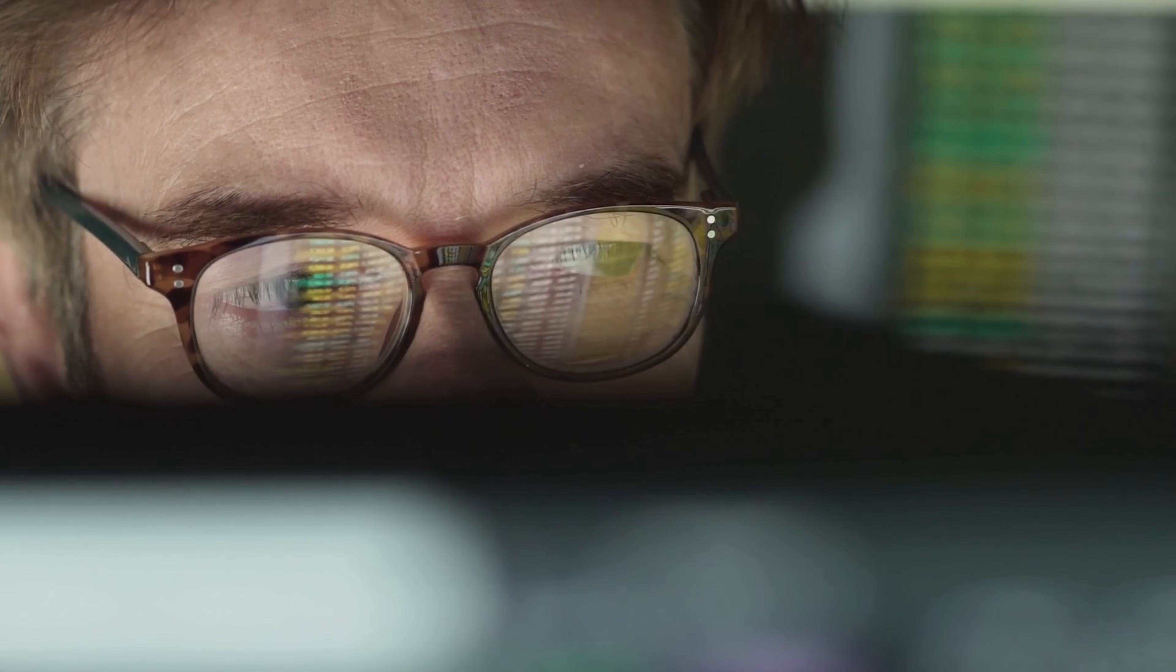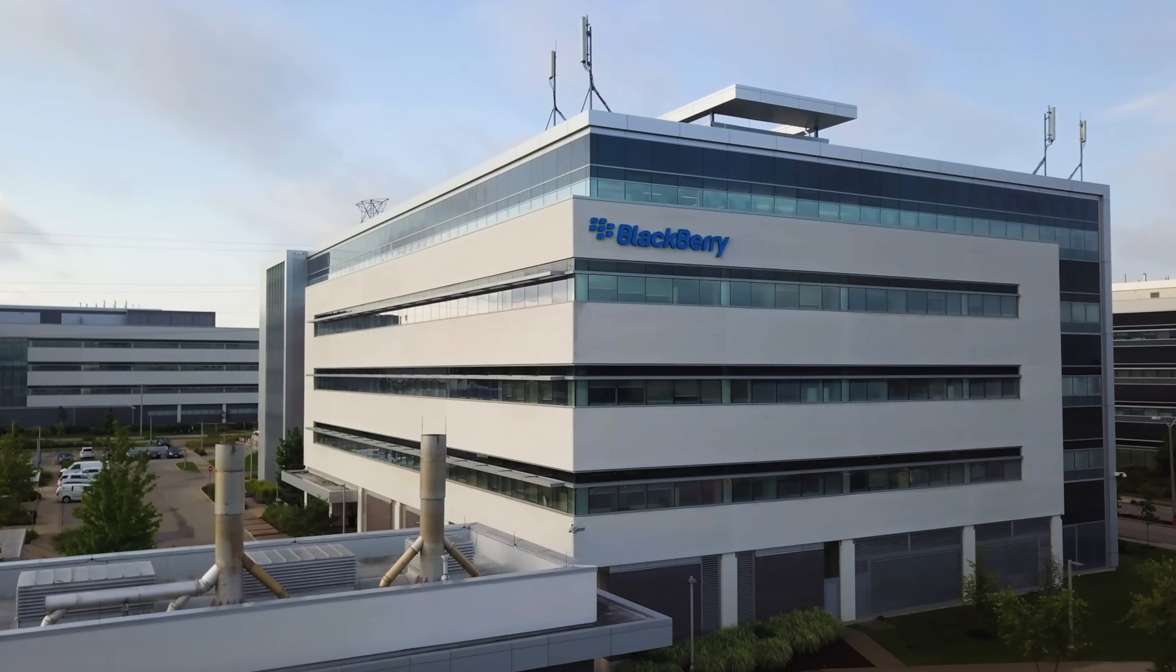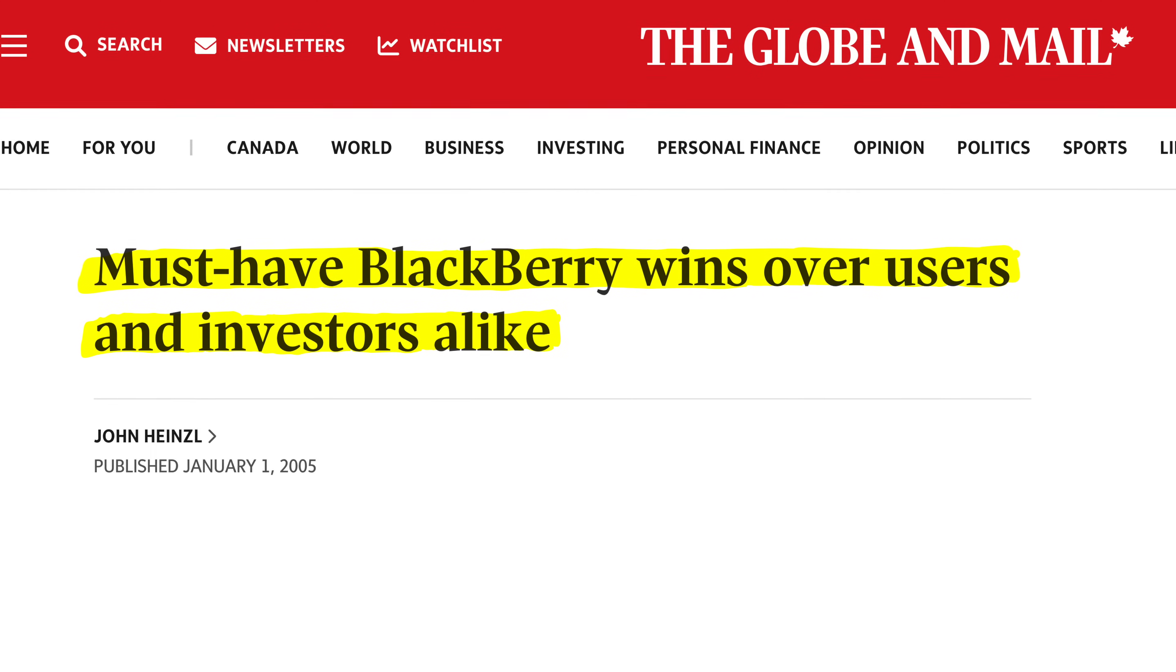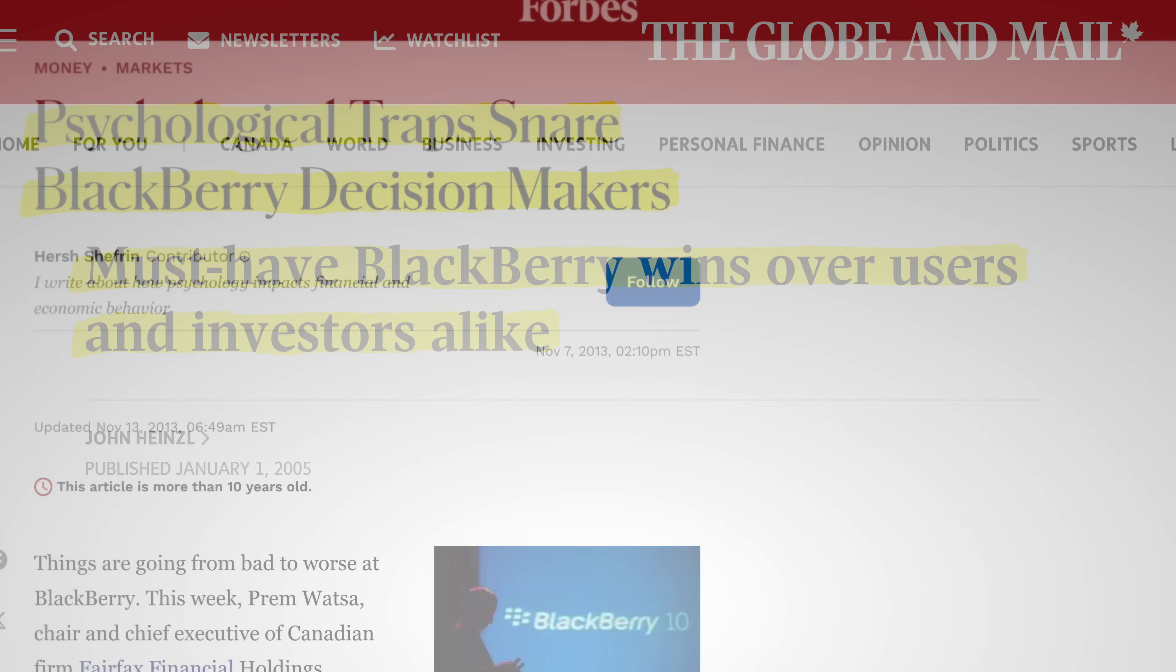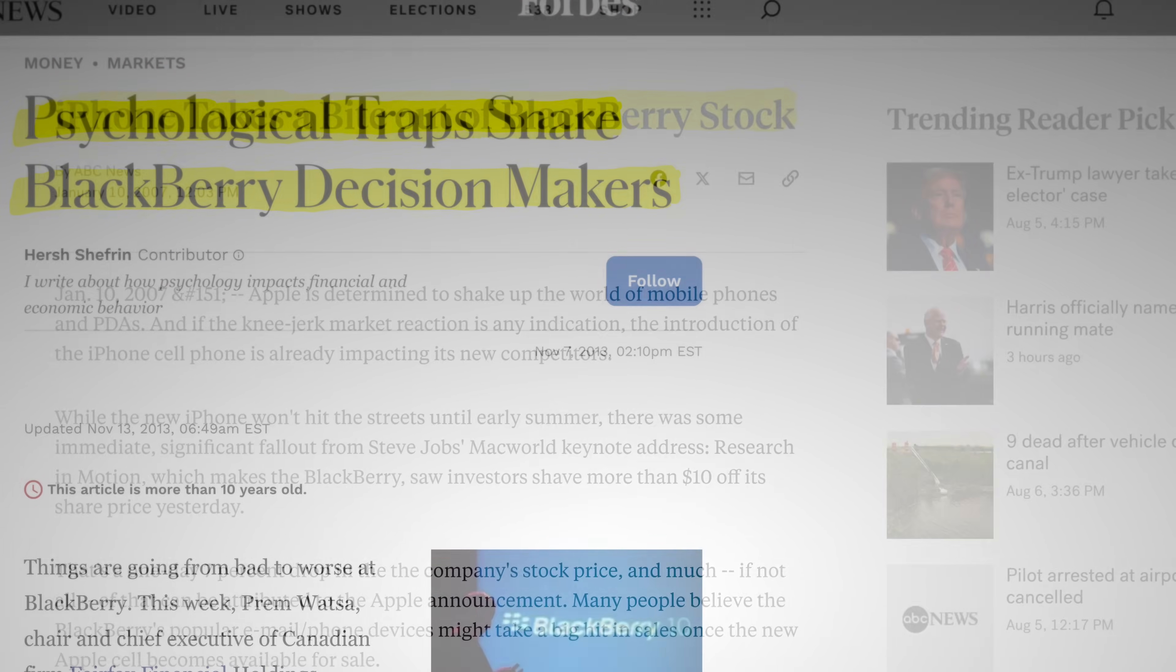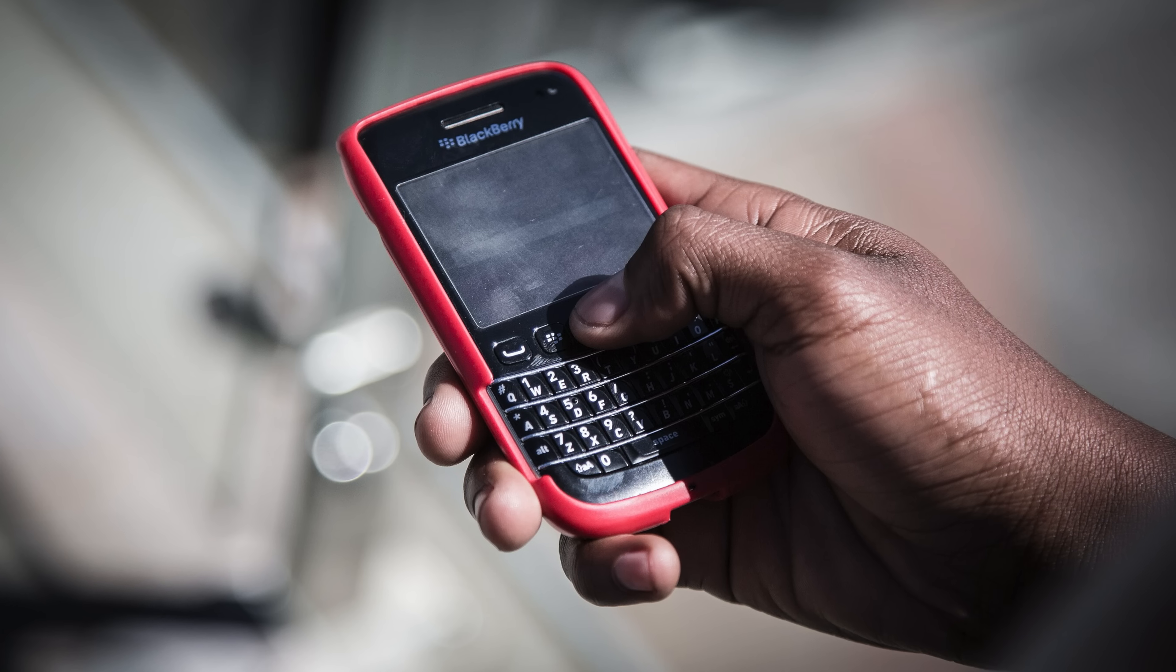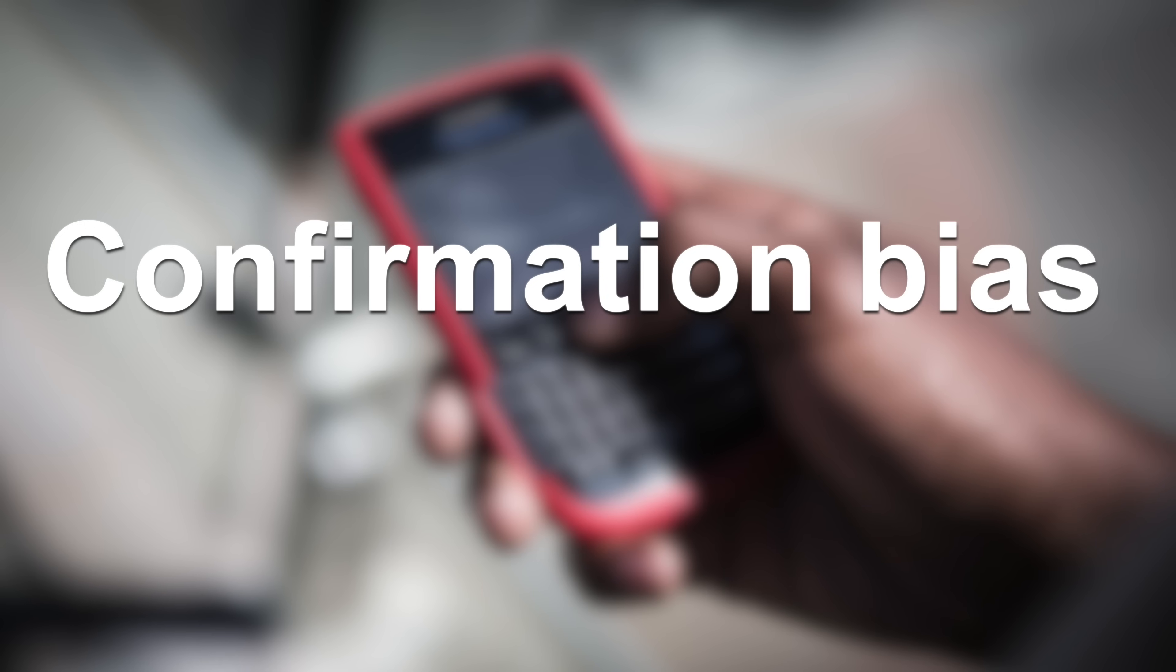Imagine you invest in a tech stock because you believe in the company's future. You start seeking out news, reports, and expert opinions that confirm your belief that the stock will perform well. And you might ignore or downplay any negative news or analysis about the company. The story of BlackBerry is an example of how confirmation bias ruined a company.